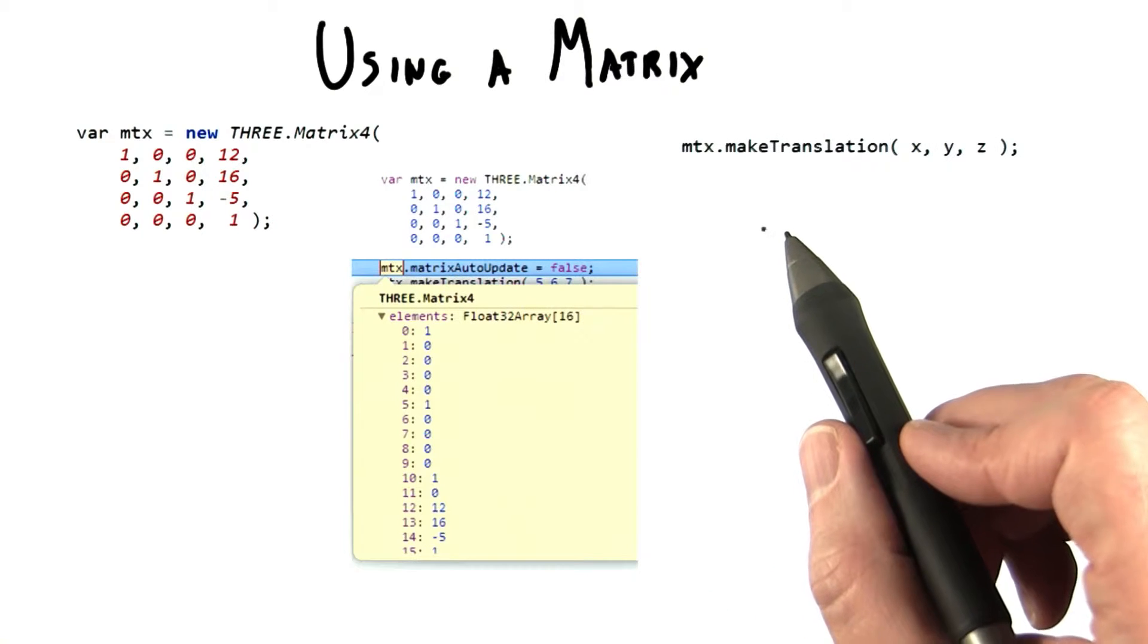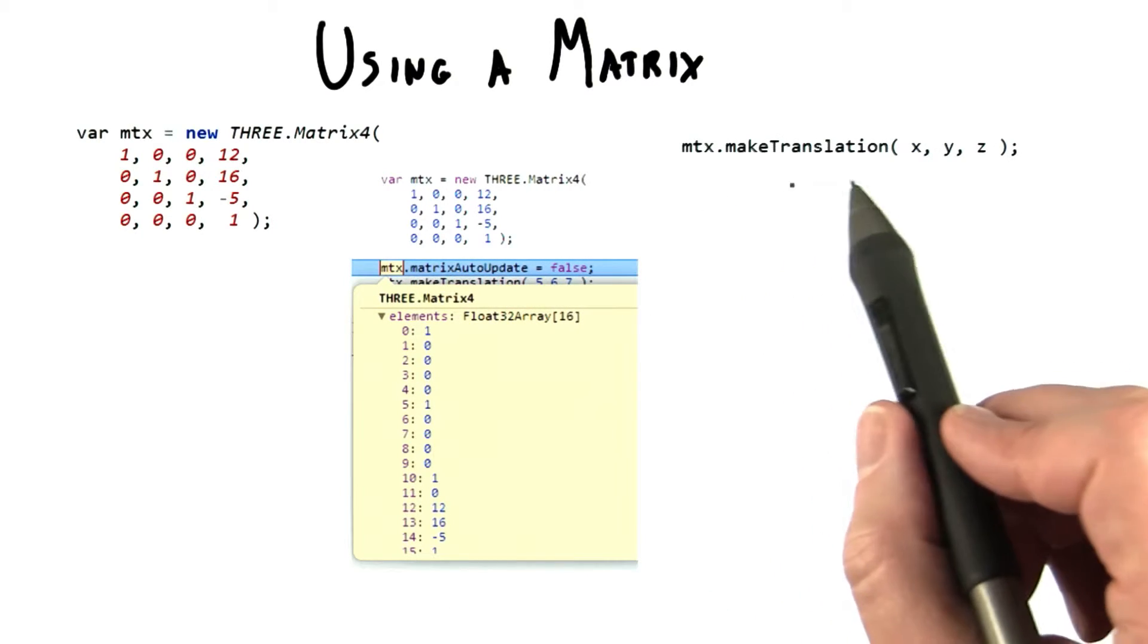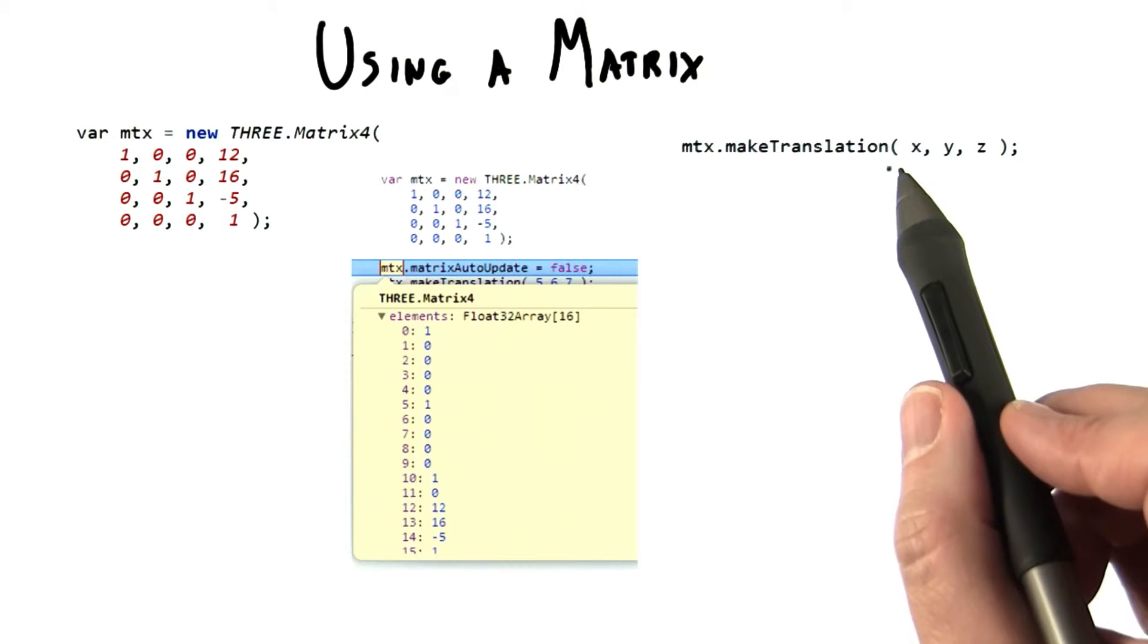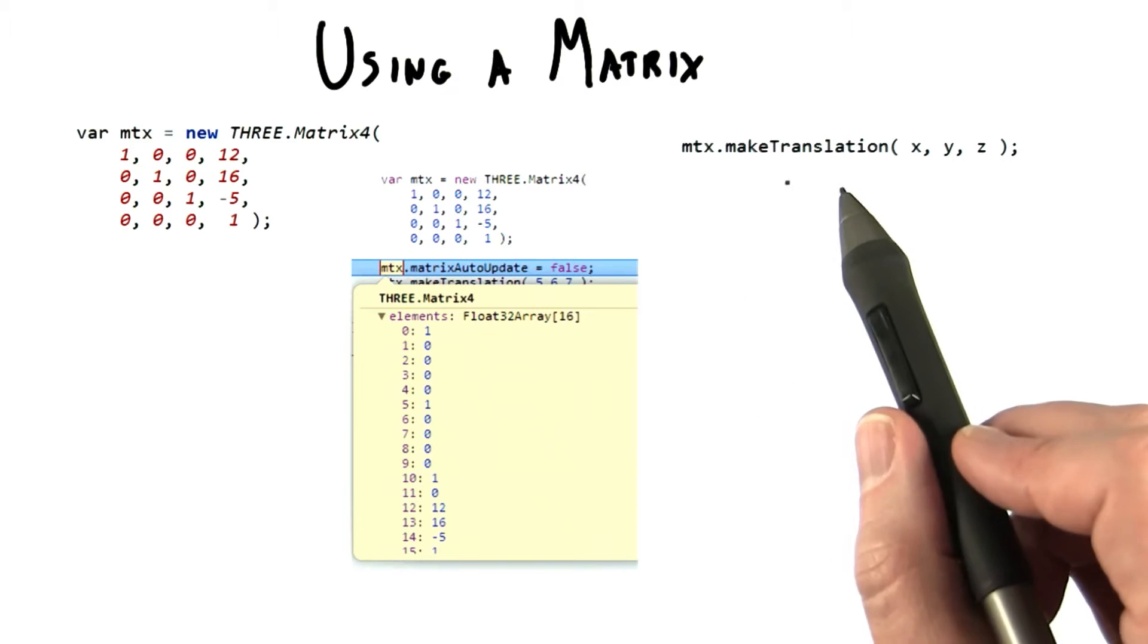Since translation is a common transform, 3JS provides a function to set a translation matrix, called make translation. You give the position and it fills in the matrix for you.